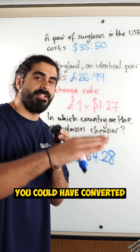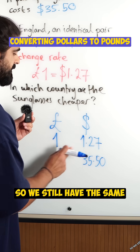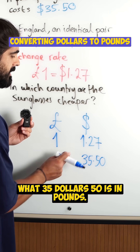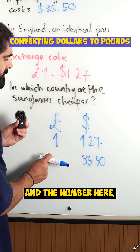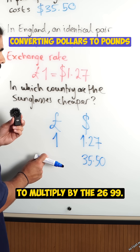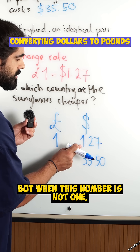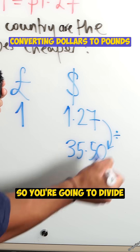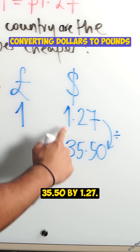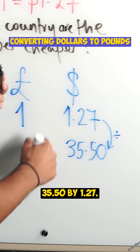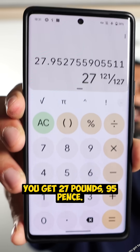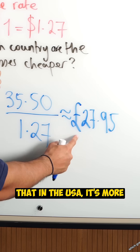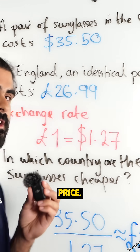Now let me show you how you could have converted everything to pounds. We still have the same conversion, but I want to know what $35.50 is in pounds. Before I had one and the number here, so I just needed to multiply. But when this number is not one, all you need to do is a division. So you're going to divide $35.50 by 1.27. Let's check that on the calculator — you get £27.95. Which goes to show that in the USA it's more expensive than the UK price. Nice.